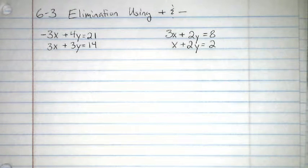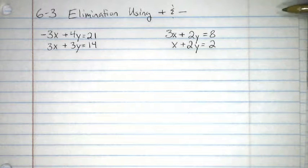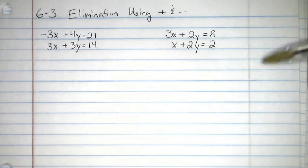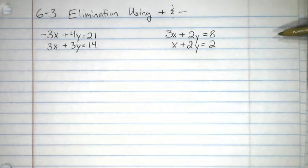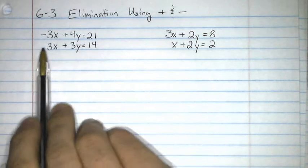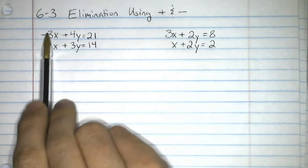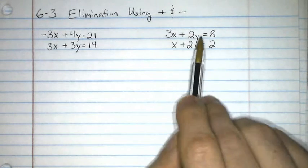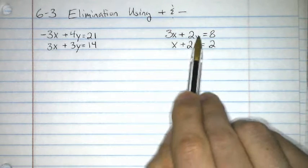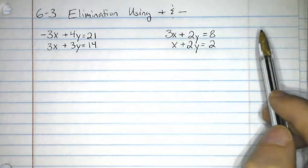Okay, so when we're doing elimination by addition or subtraction, what you want to look for is variables in both equations that either have exactly the same or exactly the opposite coefficient. And what I mean by that is right here, see what the x is? We have a minus 3 and a 3. That one we can take care of. Here, see how we have a 2 and a 2 for the y's? We can take care of that as well.